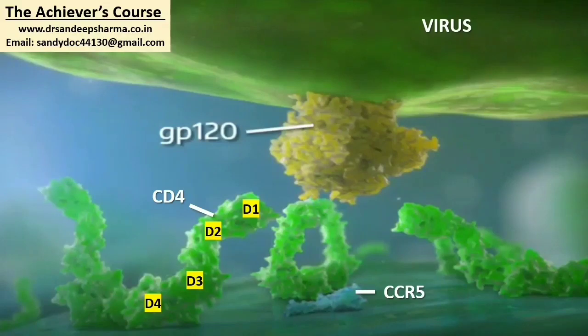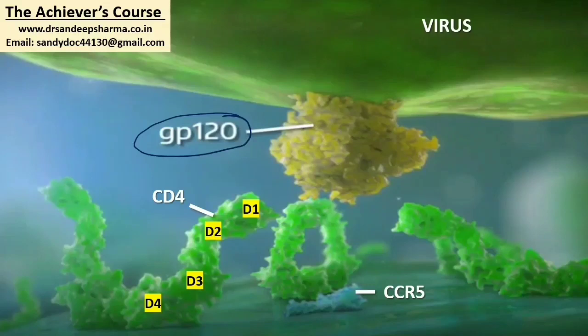Now look at this diagram — this is showing what actually happens in a normal HIV infection. HIV on its surface has glycoprotein 120 molecules. Glycoprotein 120 has its own subparts, and there is another glycoprotein known as glycoprotein 41, which is not normally present on the surface — its role will come a bit later. This is your CD4 receptor and this is your chemokine receptor 5, also known as the coreceptor or CCR5 receptor.